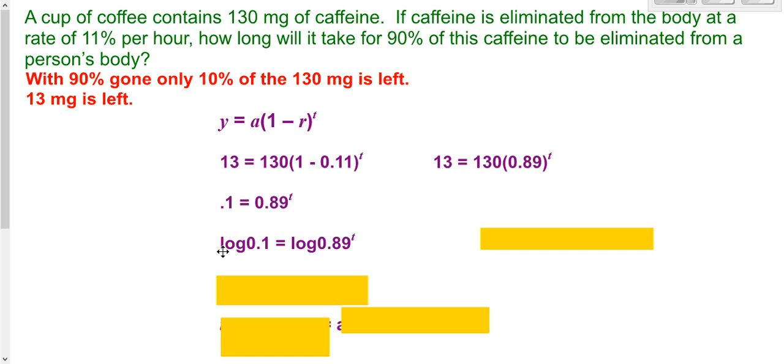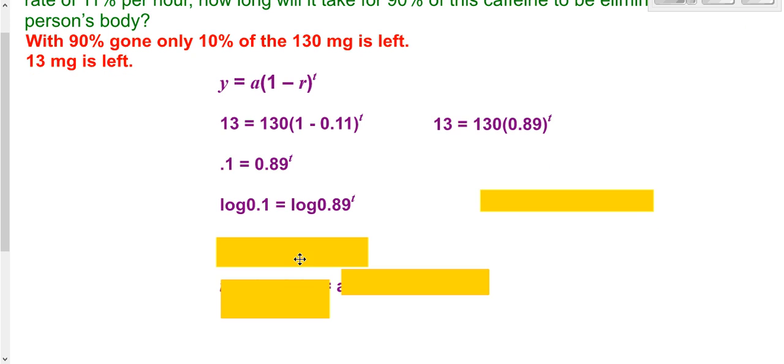I chose to use a common log. There's no base written, so that's assumed to be a common log. So I applied a common log to both sides. You could apply a natural log to both sides. It's not going to make a difference. You're going to get the same answer in the end. Now you have an exponent after logarithm. You can put your exponent in front. Now you'd have your exponent in front, which is T, multiplied by something. So to undo multiplication, you have to divide both sides by the log of 0.89.